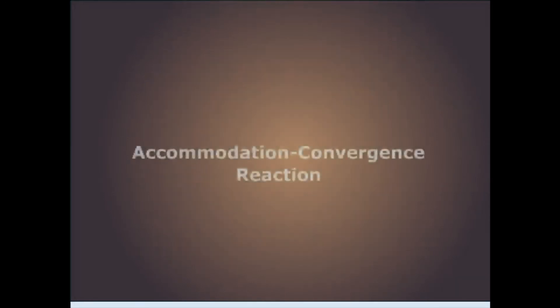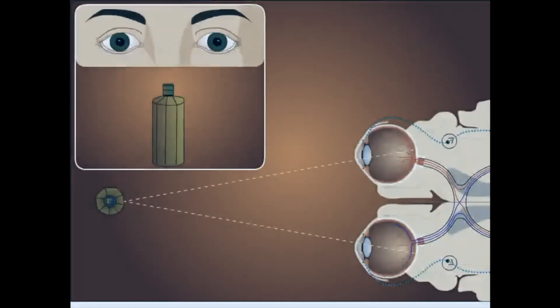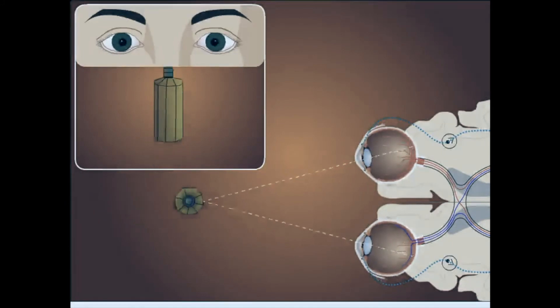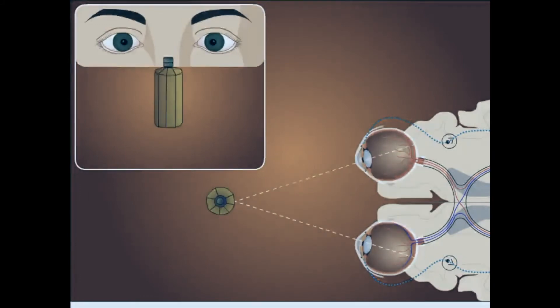The accommodation-convergence reaction occurs when an individual attempts to focus on a nearby object. This reaction consists of three components: accommodation, convergence, and pupillary constriction. In accommodation, the ciliary muscle contracts and relaxes the suspensory ligaments, allowing the lens to become rounder, as shown in the illustration on the right. This helps focus a nearby object on the retina.